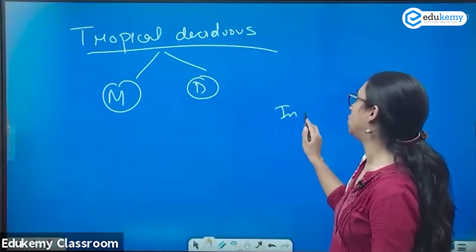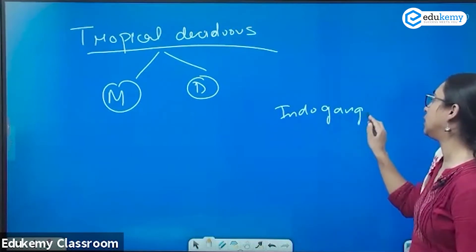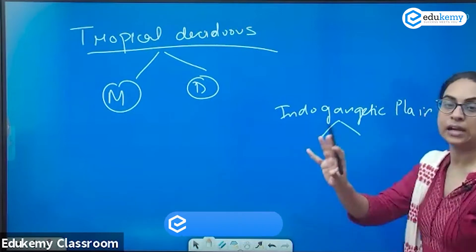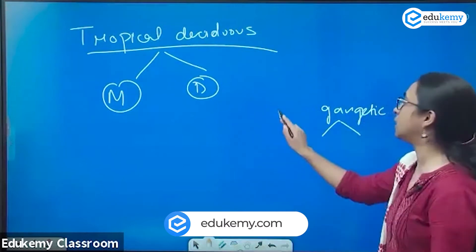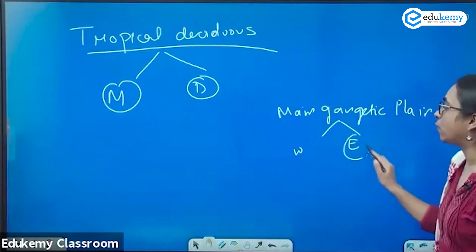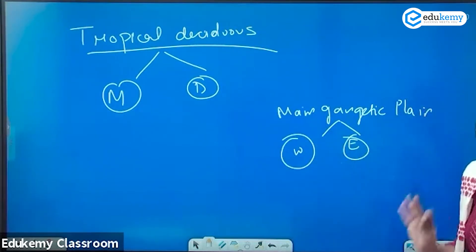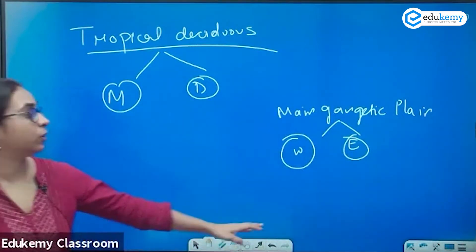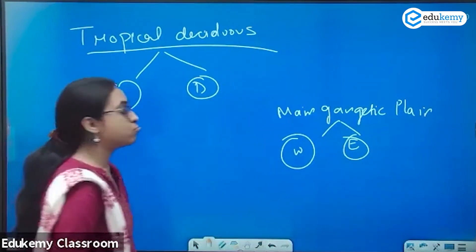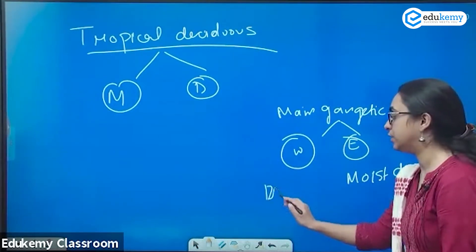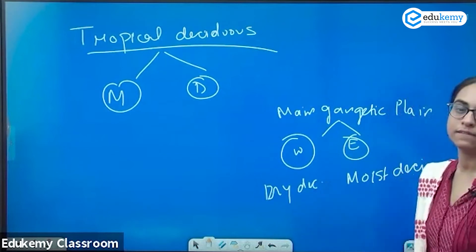If I talk about the Indo-Gangetic Plain, there is a western portion and an eastern portion of the main Ganga Plain. Where will we have moist deciduous trees — on the western side or on the eastern side? It should be on the eastern side. We will have the moist deciduous trees on the eastern side, and we will have dry deciduous trees on the western side.